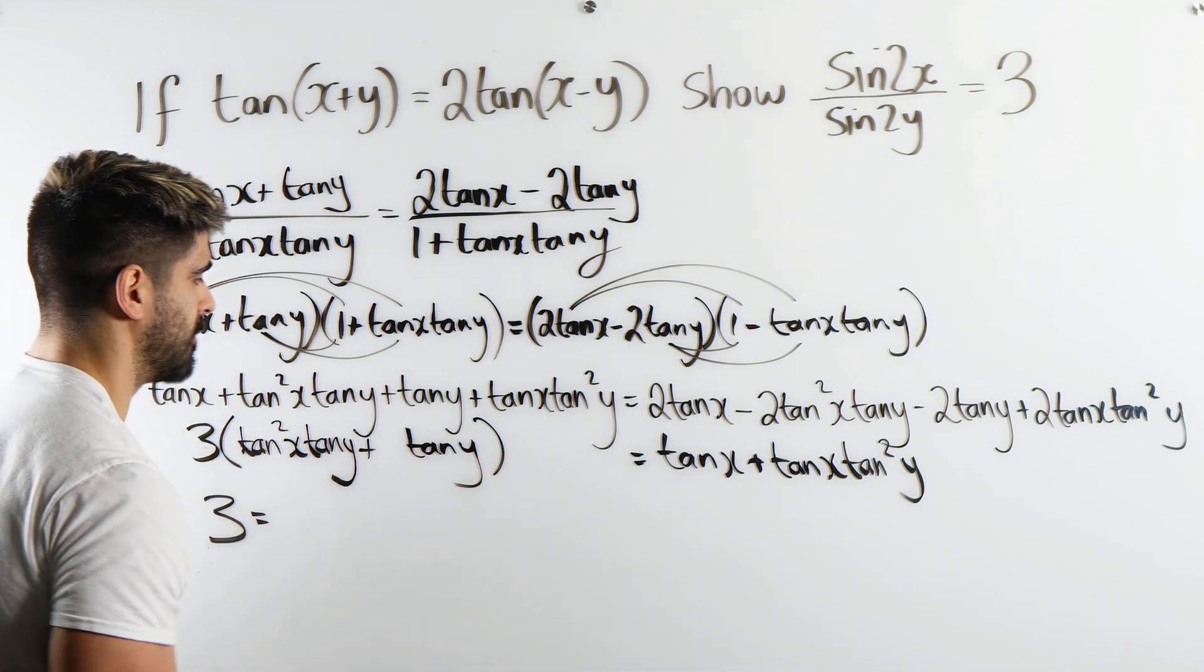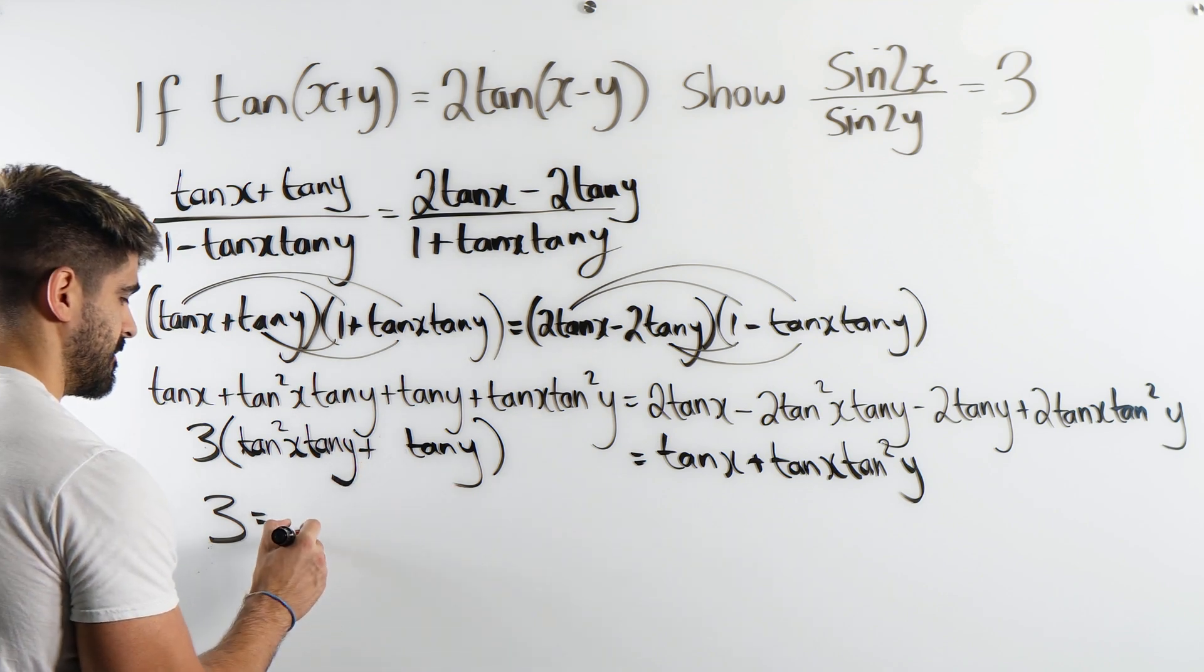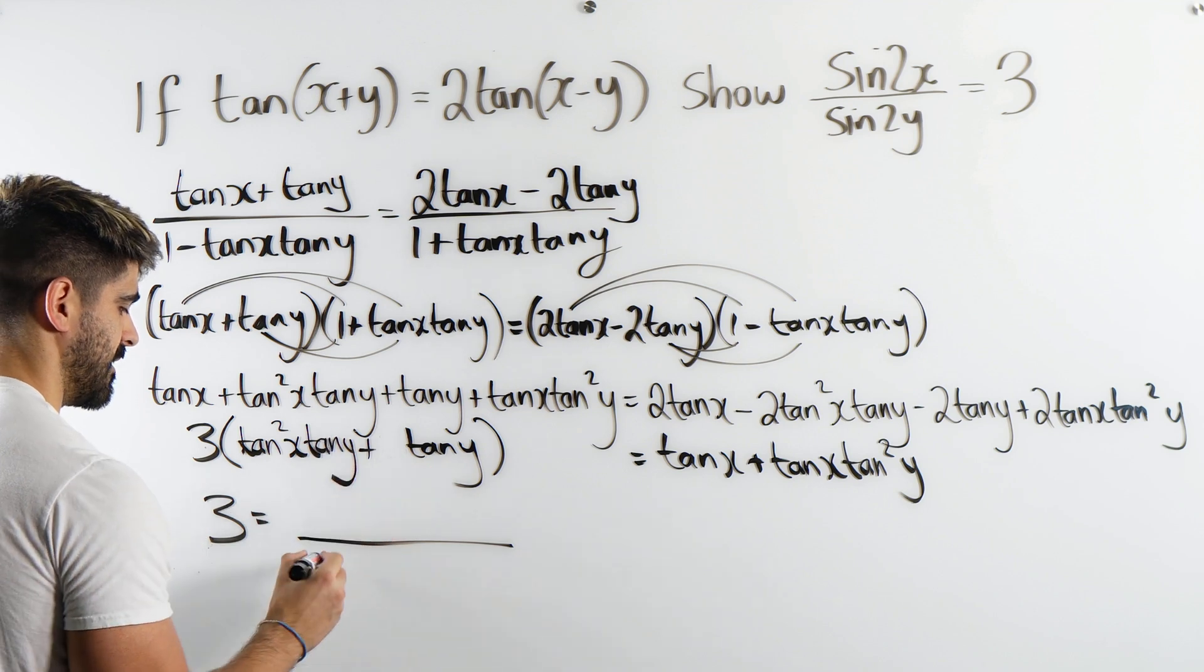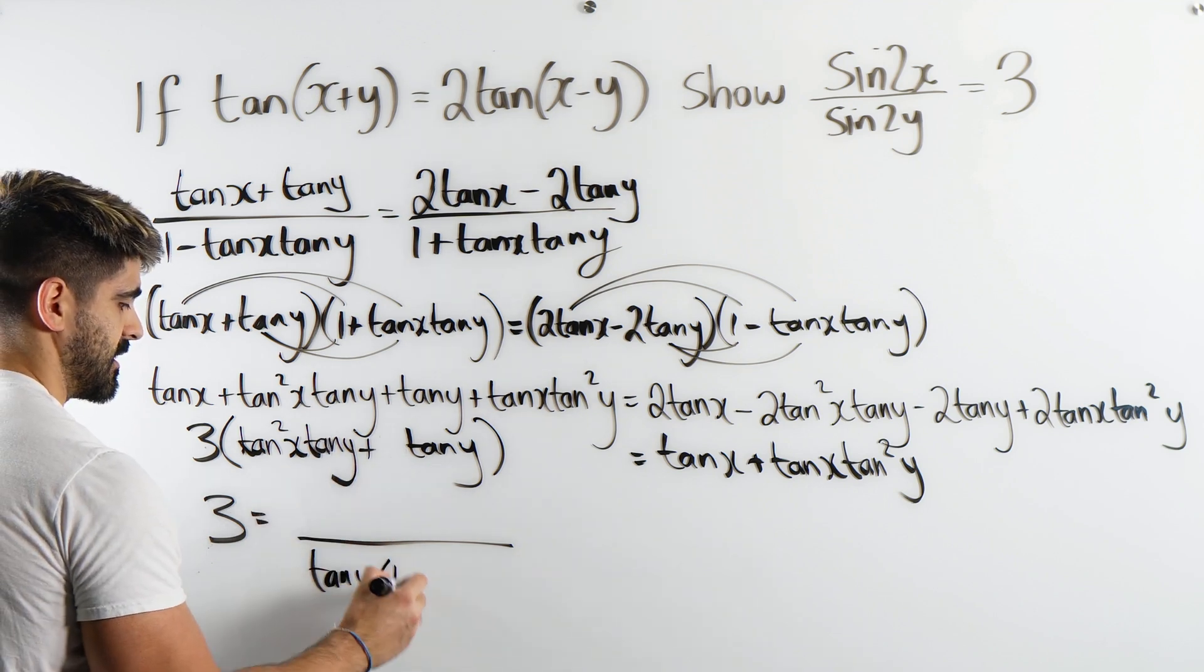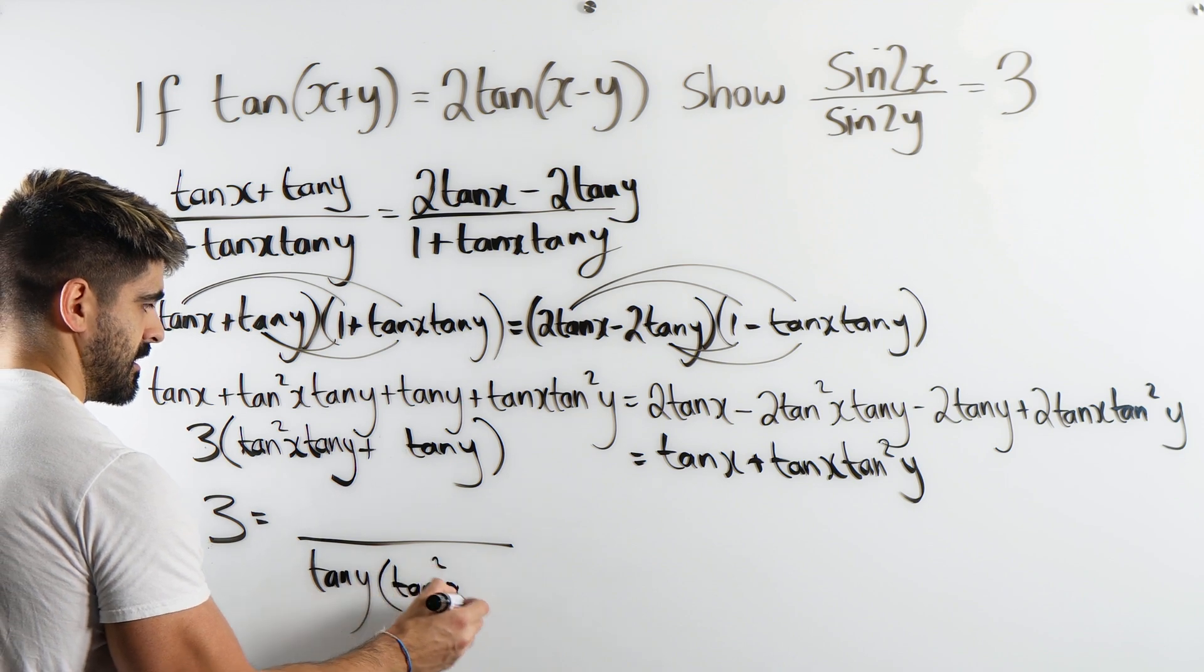Oh we could do that here. Factorize out tan. Remember we're dividing by this bracket, right? We would get tan squared plus 1.